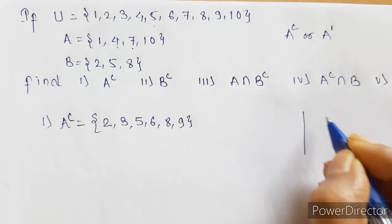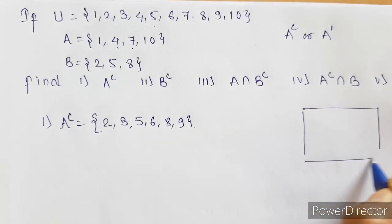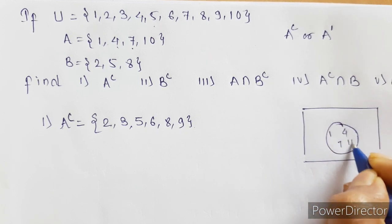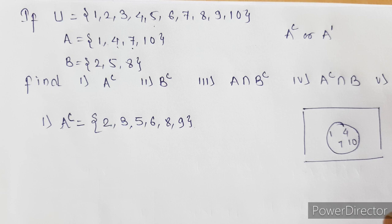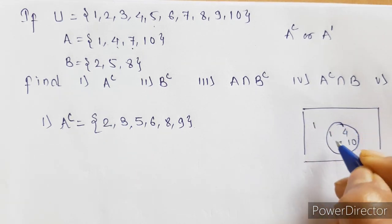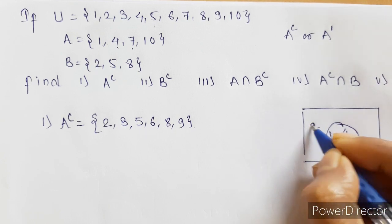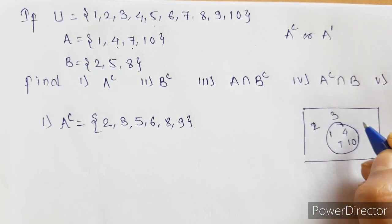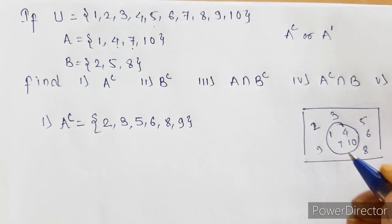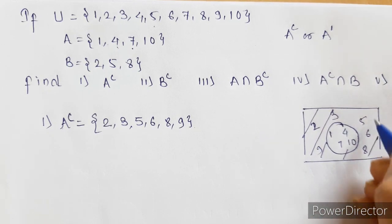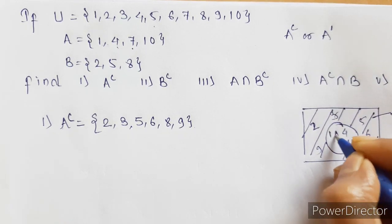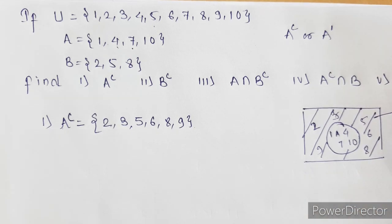If we draw a Venn diagram, this circle is A. In A we have 1, 4, 7, and 10. In the universal set outside A we have 2, 3, 5, 6, 8, and 9. So everything outside A is going to be A complement.